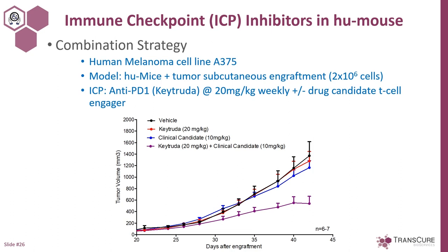Most CDX and PDX treated with monotherapy based on immune checkpoint inhibitors will give very few percentage TGI, sometimes nothing at all. That's the example here using A375 melanoma cell lines — Keytruda in red showing no efficacy at all. The blue curve is a T cell engager provided by one of our customers, also a very modest TGI. But when you combine both — at the same time you release the brakes and push on the accelerator to boost the immune system — you get the best result: a very synergistic, very significant TGI by combination of Keytruda and the T cell engager.